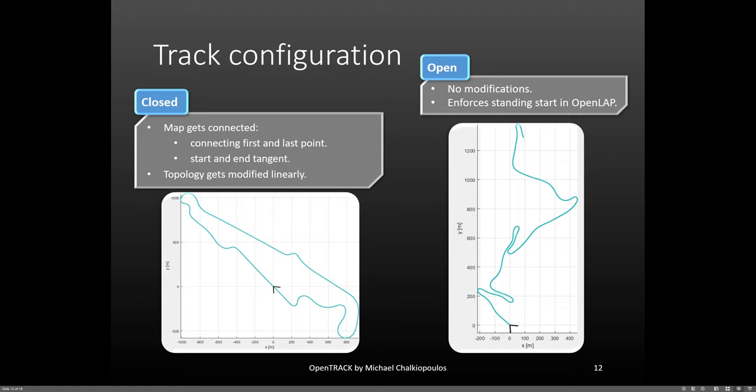When a track is open, there are no modifications made to it. But there is a problem during the lap simulation in OpenLap. And this is that we need to specify a boundary condition at the start that defines the speed, as this is not the case of a flying lap. For this reason, OpenLap enforces a standing start, meaning that it sets a speed of zero at the start. You can obviously modify this value if you want.